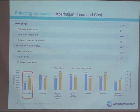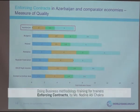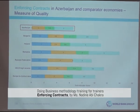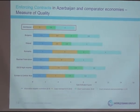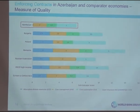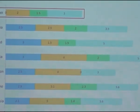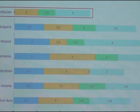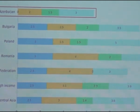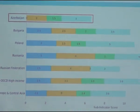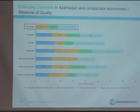Azerbaijan needs 277 days, which is lower than all other economies shown on the comparison slide. A final slide compares Azerbaijan to other regional economies, OECD high-income economies, and Europe and Central Asia on the quality questions, showing how each country scores on the four indices, allowing an effective comparison of the legal framework and quality of laws related to commercial disputes.